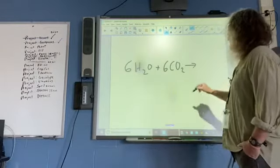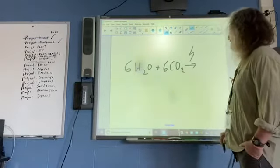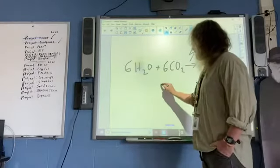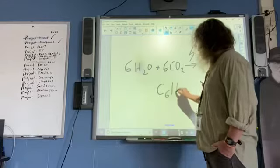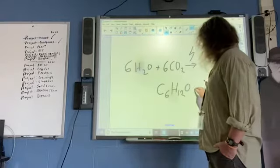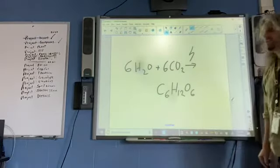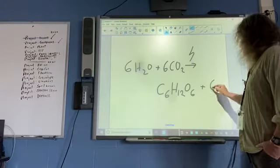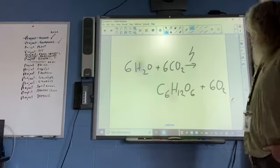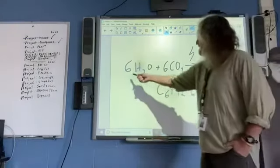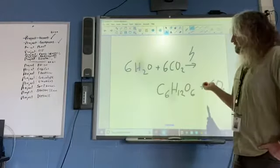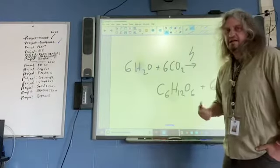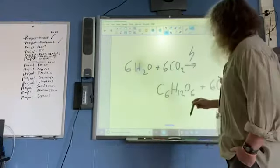Then, with a little bit of light energy, it gets transformed into one molecule of C6H12O6. That's glucose, sugar. And then there's leftover six oxygen gas molecules. When you see scientists use these symbols, that's what it means. It's just a way of shorthanding chemical reactions. We call them chemical formulas.